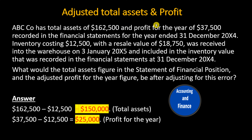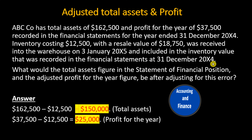Adjusted Total Assets and Profit. ABC Co. has total assets of $162,500 and profit for the year of $37,500 recorded in the financial statements for the year ended 31 December 20x4. Inventory costing $12,500 with a resale value of $18,750 was received into the warehouse on 3 January 20x5 and included in the inventory value recorded in the financial statements at 31 December 20x4.